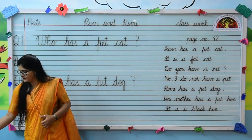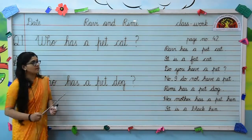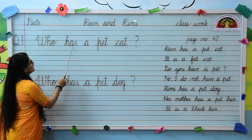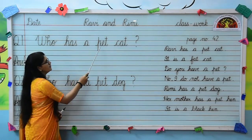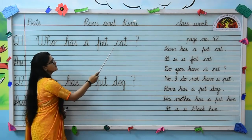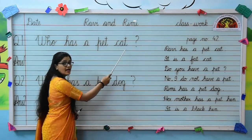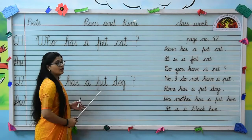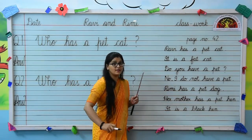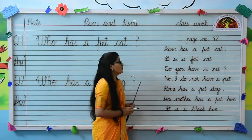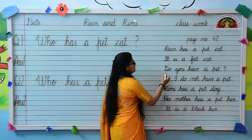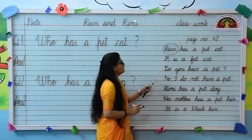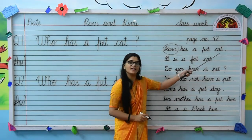Now read question number 1. W-H-O, who; H-A-S, has; a P-E-T, pet; C-A-T, cat. Who has a pet cat? Now kids, do you remember — I told you the boy who has a pet cat. What is the name of that boy? Yes, Ravi. R-A-V-I, Ravi.